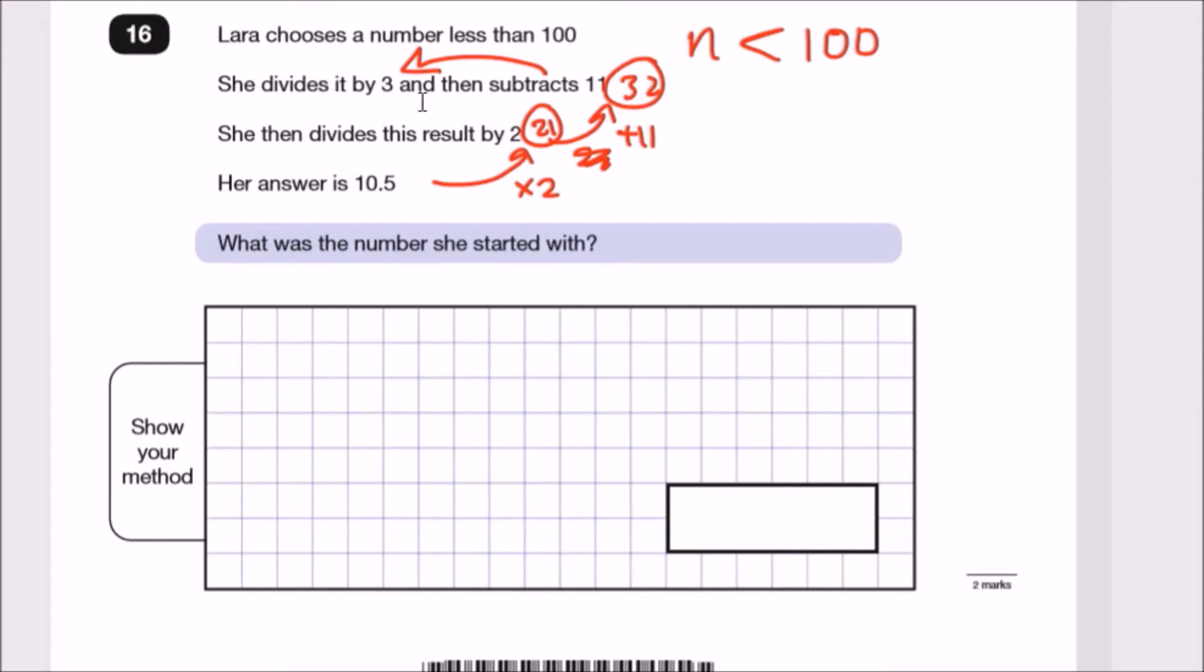Finally, in the beginning it says divide by 3. So instead of dividing by 3, we multiply by 3. It would be 32 times 3, and 32 times 3 is quite easy. It would be 96.